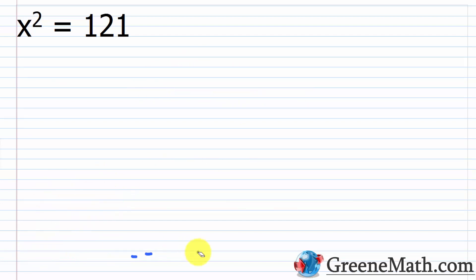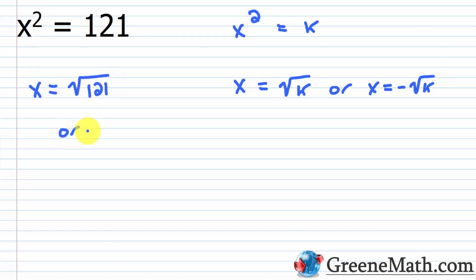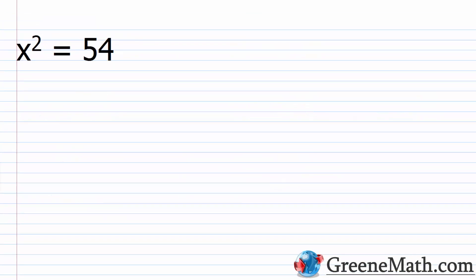When you work with these equations, you don't need to go through and take the square root each time — you can just use your property. If I have x squared equals some number k, this leads to x equals the square root of k, or x equals the negative square root of k. So for x squared equals 121, that gives x equals the square root of 121 or x equals the negative square root of 121, which leads to x equals 11 and negative 11, because the principal square root of 121 is 11.